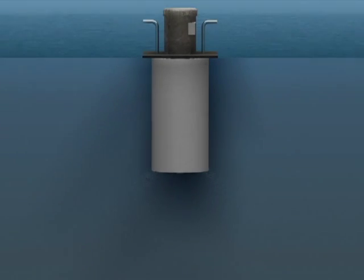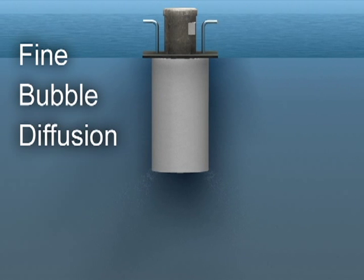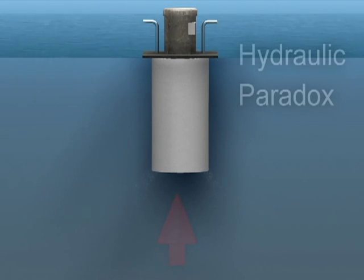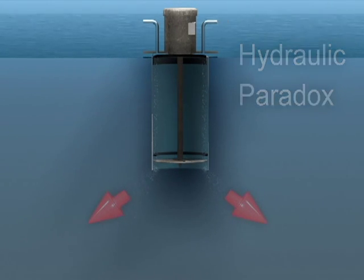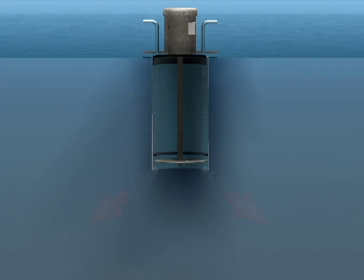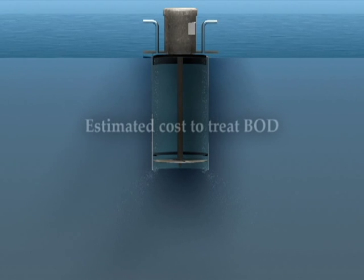This new fine bubble diffusion system pulls wastewater up from the bottom and then, using a physics principle called the hydraulic paradox, it shatters the surface tension of the water. This creates an imbalance in pressure, which pulls air into the water like a vacuum. An added benefit of this design is the savings in energy costs.